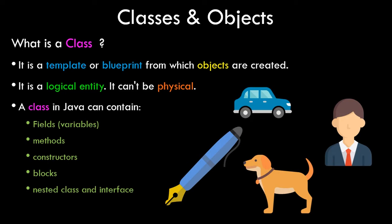A class can be of a car, a person, a dog, an animal — anything. We need a class because it is a template that combines different fields. If you want to make your own custom data type you can use a class — you can make an analogy with data types. Just as we have basic variables like int and float, a class can act as an inbuilt custom data type.